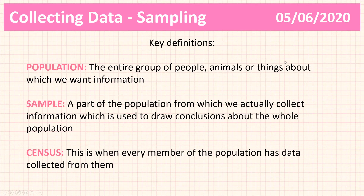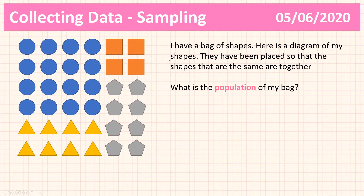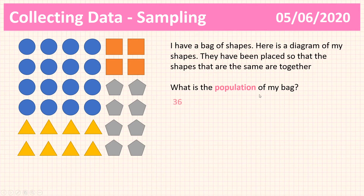Now let's continue with the actual lesson. Here I have a bag of shapes — you have to imagine all of these shapes are inside a bag. I've drawn a diagram of all my shapes, putting the same shapes next to each other to make it easier. What I'd like you to do is pause the video and tell me: what's the population of this bag? The population of my bag is 36, because population is everything we are looking at, and there are 36 shapes to choose from.